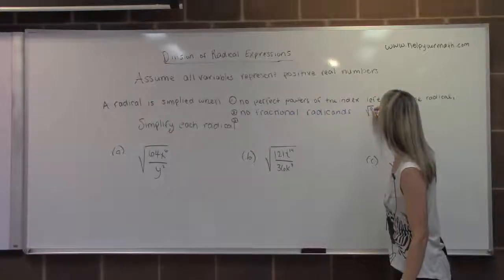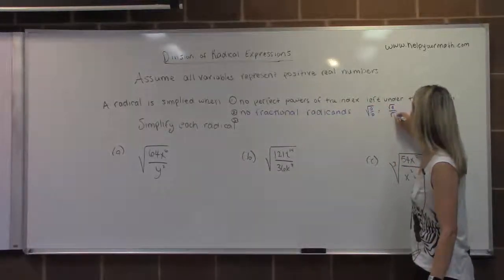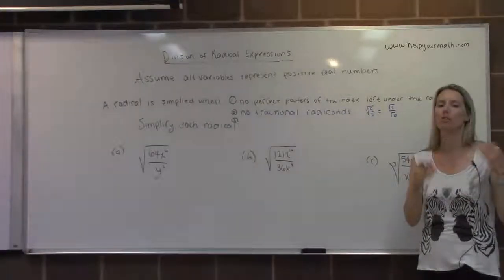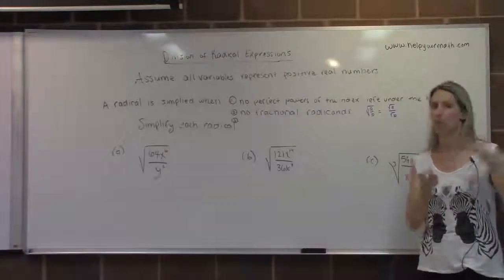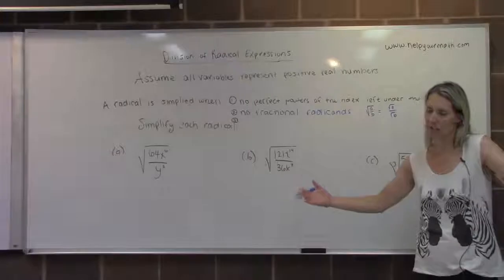If we have the square root of A over B, we could rewrite it as the square root of A over the square root of B, and vice versa. If we had two radicals, one in the numerator and one in the denominator, as long as they have the same index, we can merge the two radicands into one fraction if that helps.